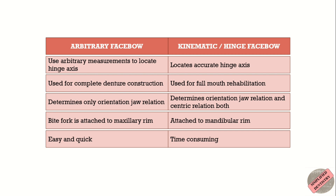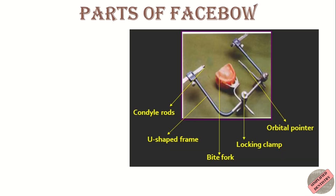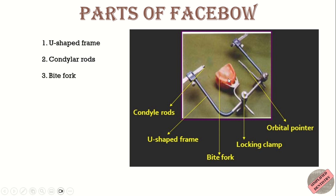A face bow has five parts: first, the U-shaped frame; second, condylar rods; third, bite fork; fourth, locking devices; and fifth, orbital pointer pin.